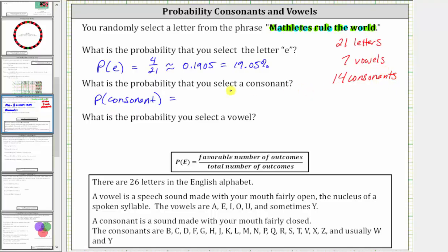So the probability you select a consonant is 14 divided by 21, or 14/21, which does simplify. 14 and 21 share a common factor of seven. Simplifying, we divide both by seven, which gives us 2/3.